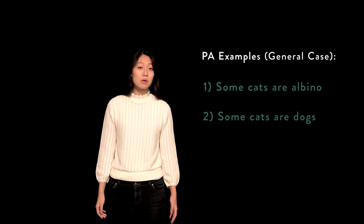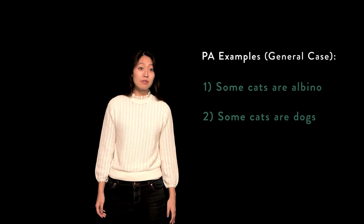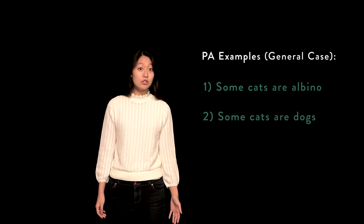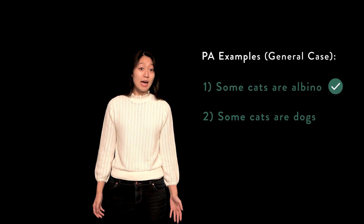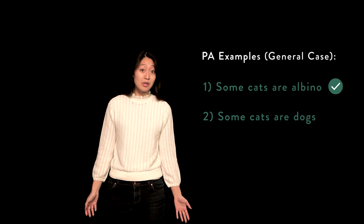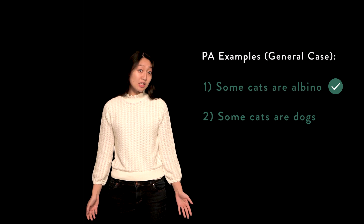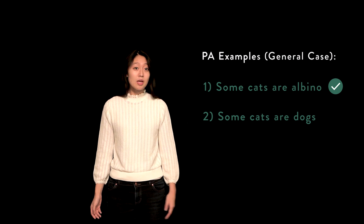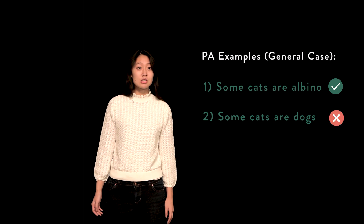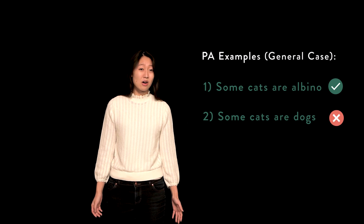Propositions one and two are both examples of the particular affirmative. However, there is an important distinction. One is true because some cats are albino — two percent of them, actually. But two is false, given that cats and dogs are separate species.